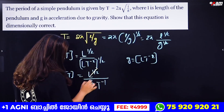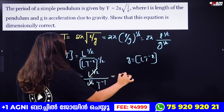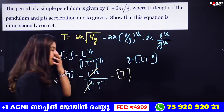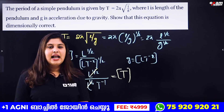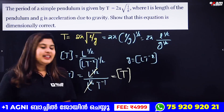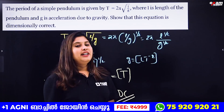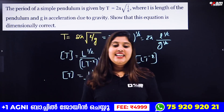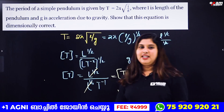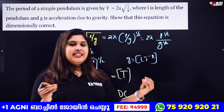L raised to 1/2 in numerator and L raised to 1/2 in denominator cancel out, leaving T raised to 1, which equals T. Therefore T = T — the equation is dimensionally correct. Very easy question.